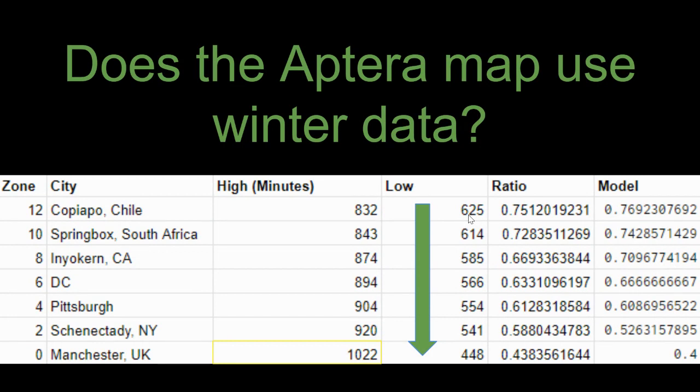It does make you wonder whether the map that they show us on the Aptera website actually uses winter data or data from the shortest days. As you can see, that is how the zones are broken up from this table at least.